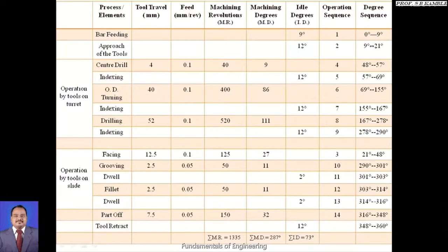Tool retract starts at 348° and ends at 360°, covering the standard 12 ideal degrees. As a check: the tool retract must always start from 348° and end at 360°. If it does not start at 348°, review all calculated values. This confirms the degree sequence is correct and the cam completes exactly 360°.